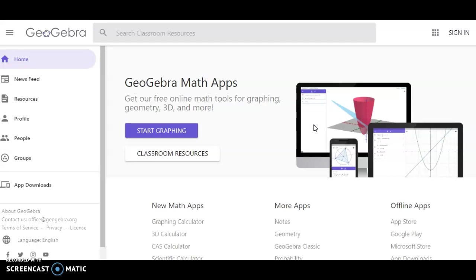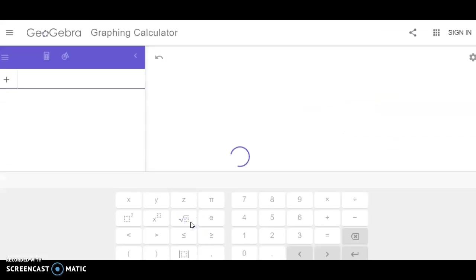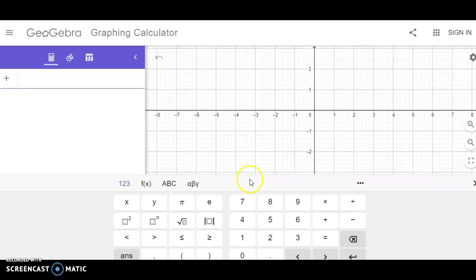If you go to geogebra.org, you should land here. Under this menu, New Math Apps, is a graphing calculator. If you click on this, you'll have the functions that you need.